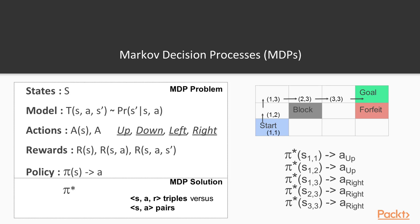In our 3x4 grid world example, we could begin conceivably from any possible state, and whatever state we're in, the optimal policy would prescribe what action to take. We could rewrite our previous plan by saying that the optimal policy action if we're in state 1,1 is up; if we're in state 1,2 is up, and so forth. Note that in reinforcement learning, we are talking about policies, not plans — not series of actions — but what action to take in each possible state that you are in.